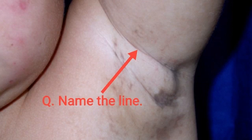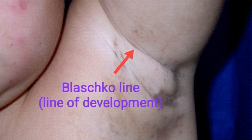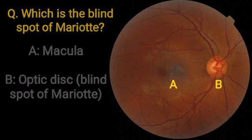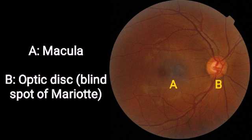Name the line. Blasko's line — a line of development. Which is the blind spot of Mariotte? B.